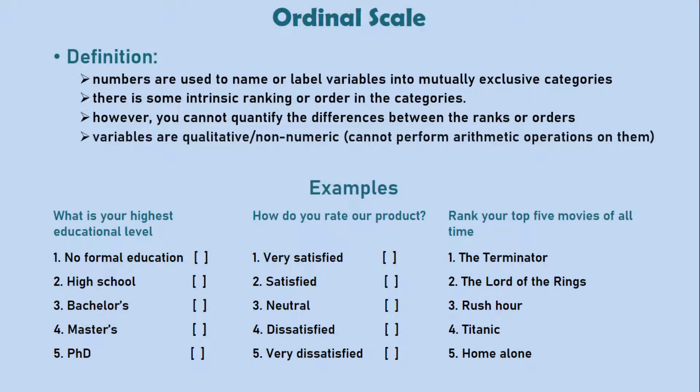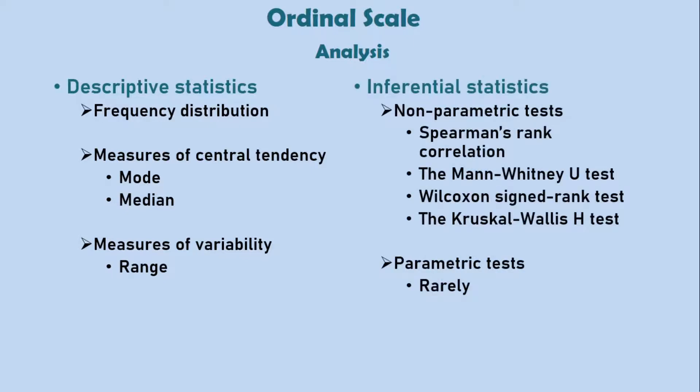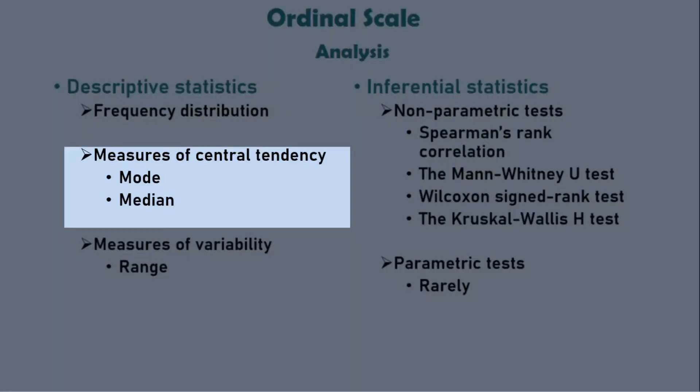Now we can take a look at some statistical analysis possible on the ordinal scale. We can find frequencies, mode, median, and range on an ordinal scale. We can also run several non-parametric tests such as Spearman's rank correlation and others. There are several ongoing debates about whether parametric tests can be performed with ordinal data. Basically, parametric tests use means as the central tendency, but we can see that we cannot determine the mean on an ordinal scale.